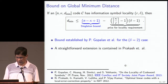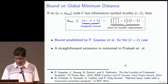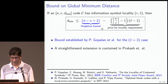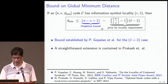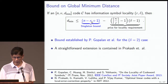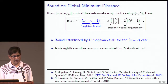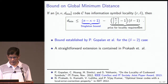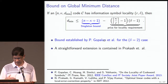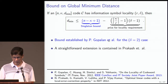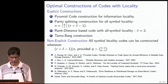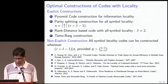All-symbol locality provides protection not only for message symbols but also for parity symbols. In the beautiful paper by Parikshit and co-authors, they established a bound showing that if you insist on locality there's a penalty to be paid in minimum distance. The minimum distance is bounded by n − k − ⌈k/r⌉ + 2 minus the penalty for demanding locality, where κ is the dimension of the code. Parikshit's group established the bound for the δ = 2 case, and we extended their results straightforwardly.